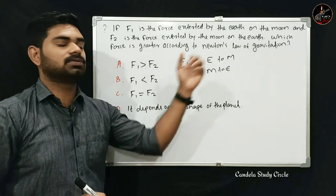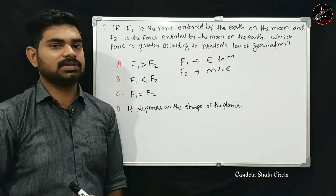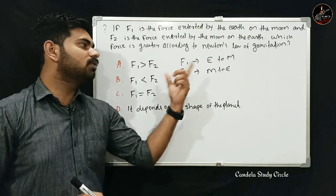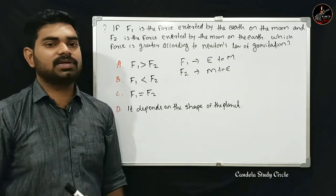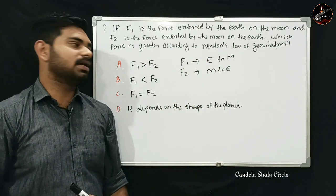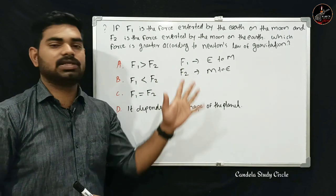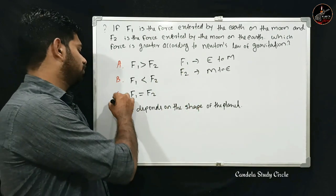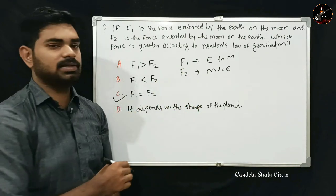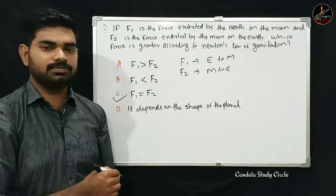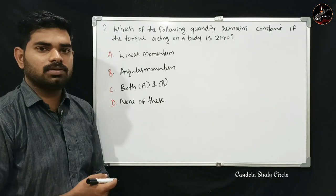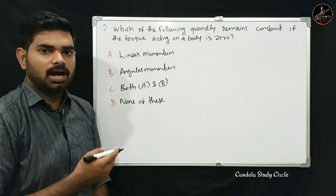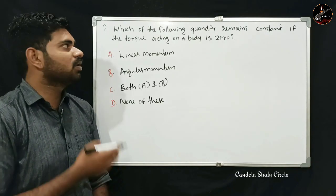According to Newton's law of gravitation, the forces F1 and F2 between two objects are equal. So F1 equals F2. Option C is the correct answer.